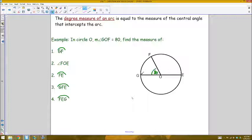The measure of arc GF, the arc connecting point G to point F, is exactly equal to the measure of that central angle which is 80 degrees. They're measured in the same units which is degrees, so GF is 80.